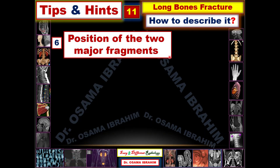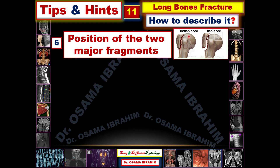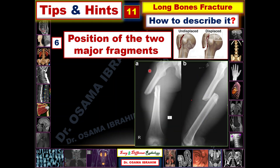Number six is the position of the two major fragments. These diagrams show fractures of the greater tuberosity of the humerus that are not displaced — described as undisplaced fractures — compared with fractures that are displaced from their sides, which are called displaced fractures. In this example of a long bone, this femur shows fractures at the proximal one-third, or at the junction between the proximal and middle one-third, and the distal segment of the femur is displaced medially.